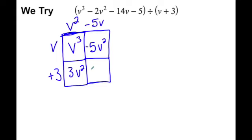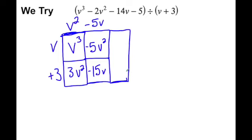Now we get this box. What's going to go in here? It will be negative 15v. Do we need to add another column? Yes, because we didn't get just a number. Finally, what goes here? I have negative 15v and I need to get to negative 14, so I need 1v. I'm going to tack on a 1 because 1 times v gives me 1v, and 1 times 3 gives me 3.